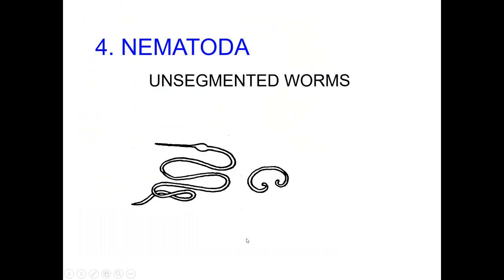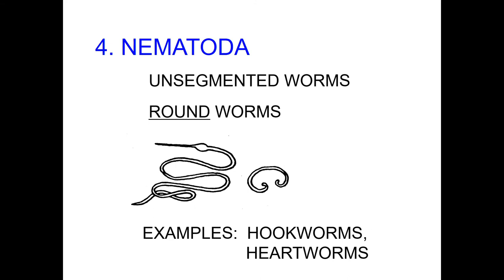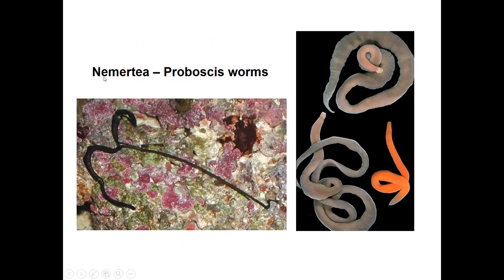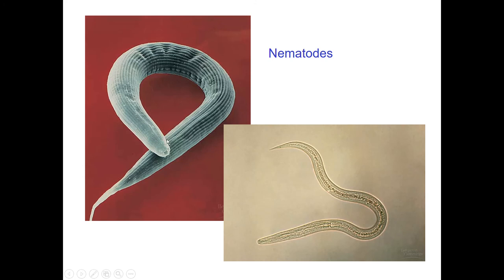Nematoda — these are also unsegmented worms; roundworms versus flatworms. Examples: hookworms and heartworms. They have a proboscis, or ribbon worms, up to 30 meters in length. These worms have a hydraulically operated proboscis used to capture prey, and closed circulatory systems — whereas the others had an almost open circulatory system. Nemertea proboscis worms, as you can see, are really long and round.